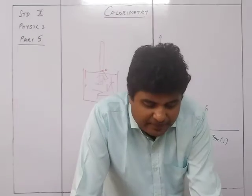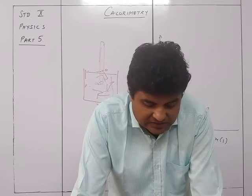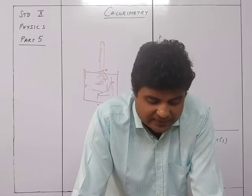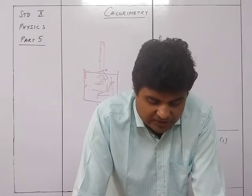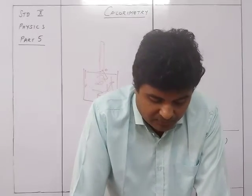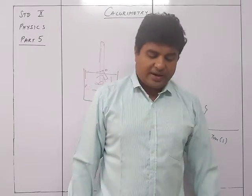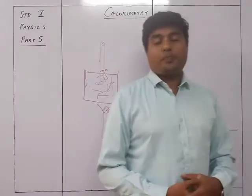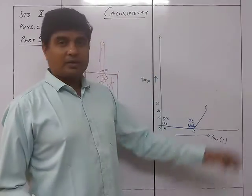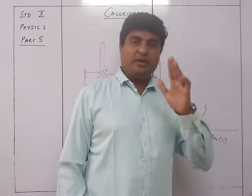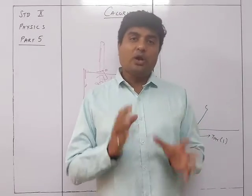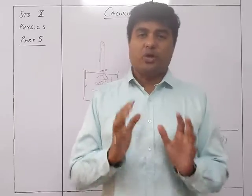The constant temperature at which ice melts — zero degrees Celsius — is the melting point of ice. The heat supplied during this time is used in melting the ice. After this, the temperature of the water formed by the melted ice begins to rise from zero degrees Celsius in part BC, as the complete conversion of ice to water has occurred.